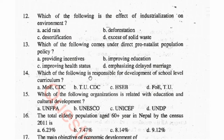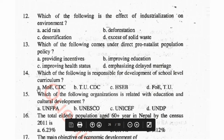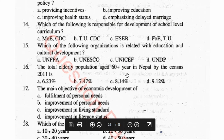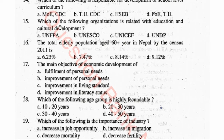Question 14: Which of the following is responsible for development of school level curriculum? Options: MOE, CDC, TUCDC, HSEB, FOE, TU. Question 15: Which of the following organizations is related with education and cultural development? Options: UNFPA, UNESCO, UNICEF, UNDP.